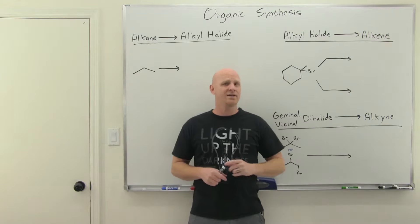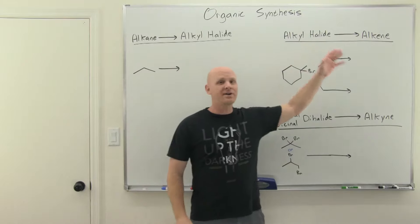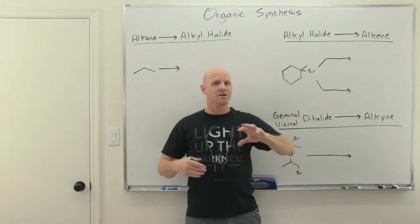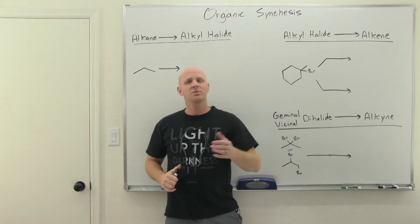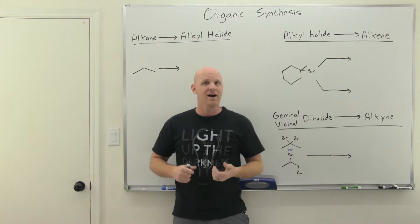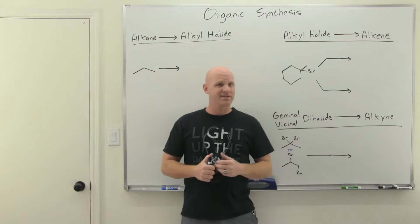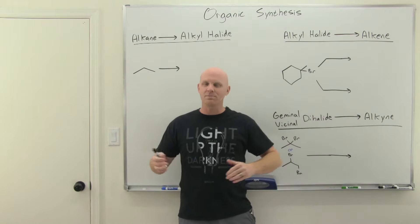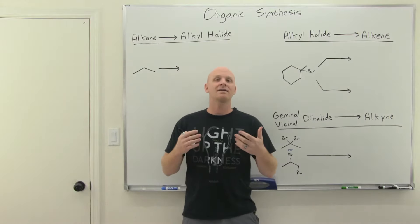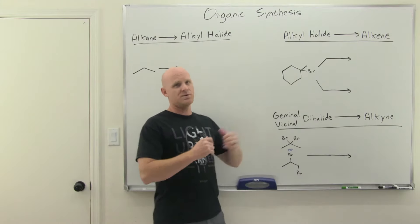So what is an organic synthesis problem? We're going to give you a starting material and a final product and say: how do you get from this starting material to this final product? Show me all the reagents and all the intermediates along the way. Generally they're going to have somewhere in the ballpark of two to five steps — that's pretty typical, though some harder classes may go a little longer. You've got to know your reagents really well, but you've also got to have them organized in your head.